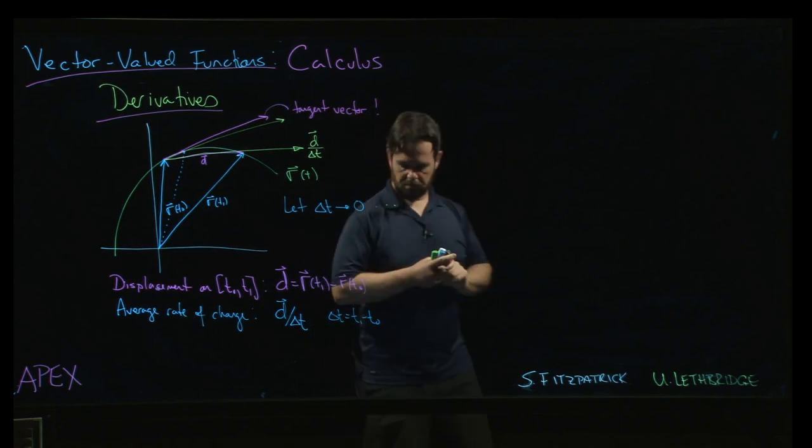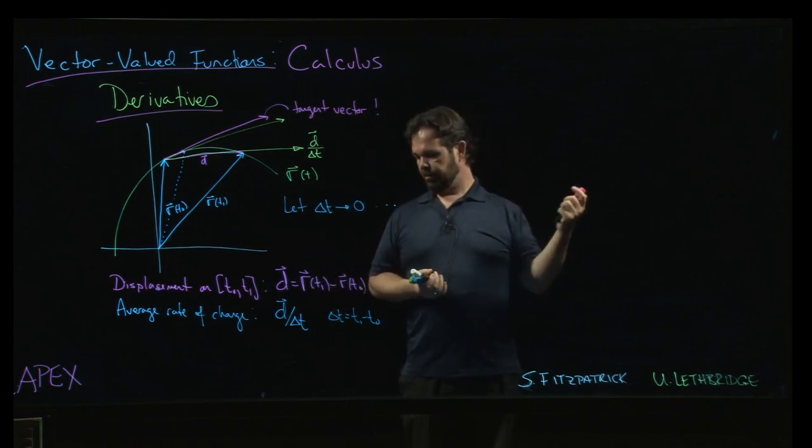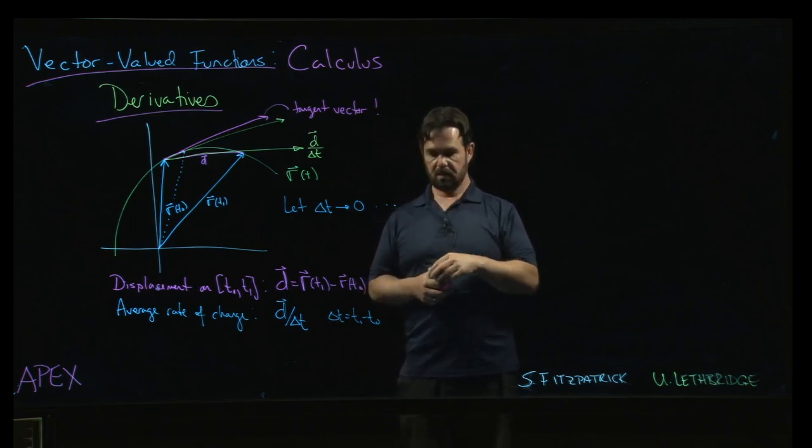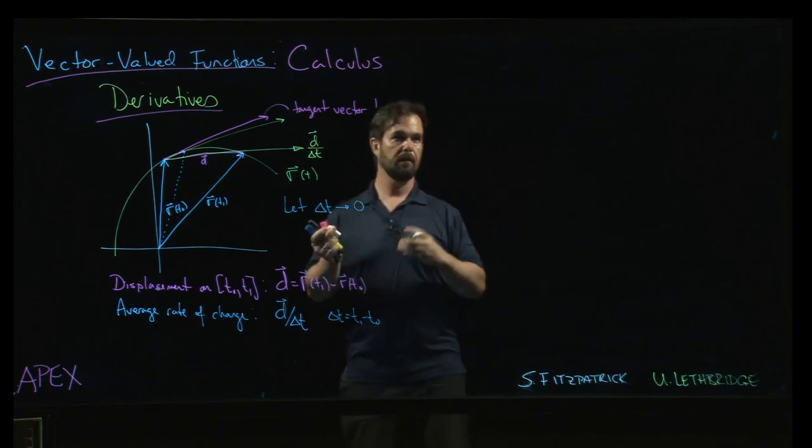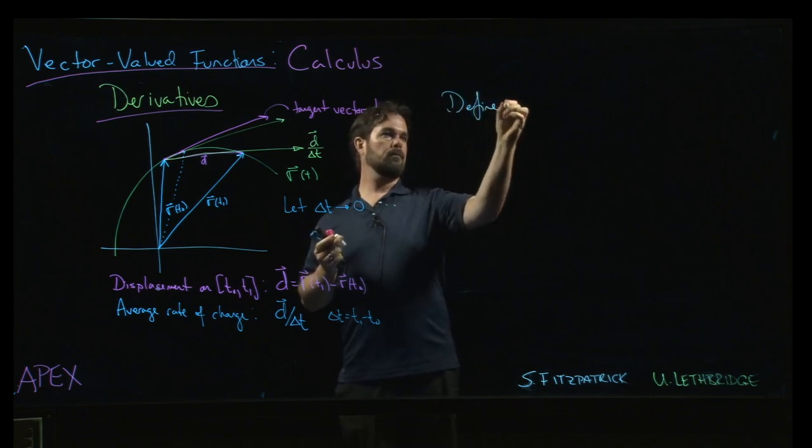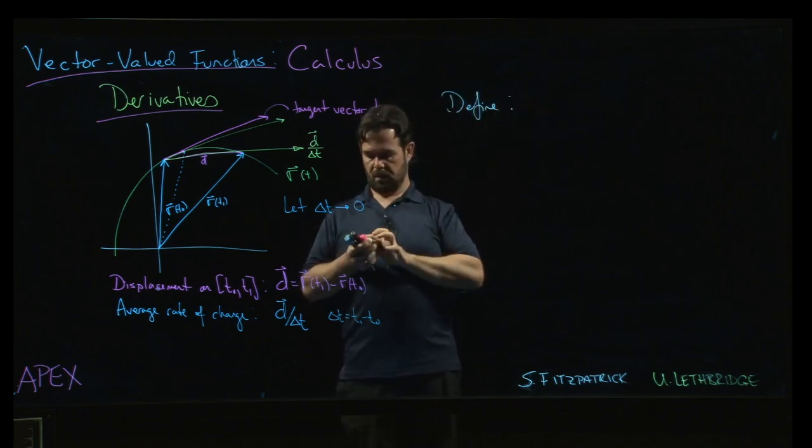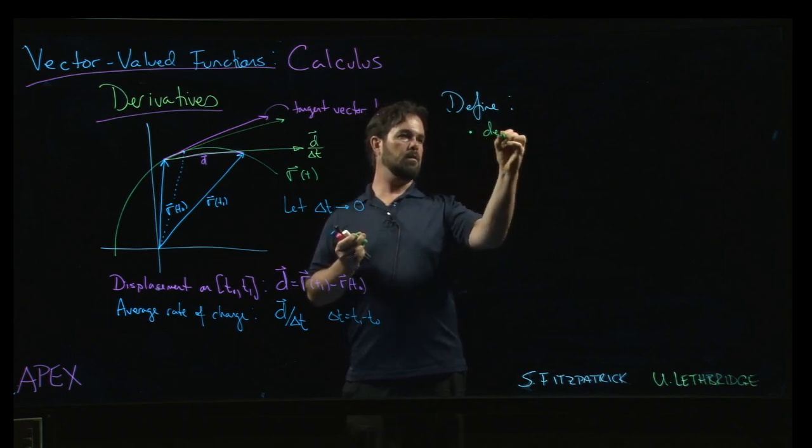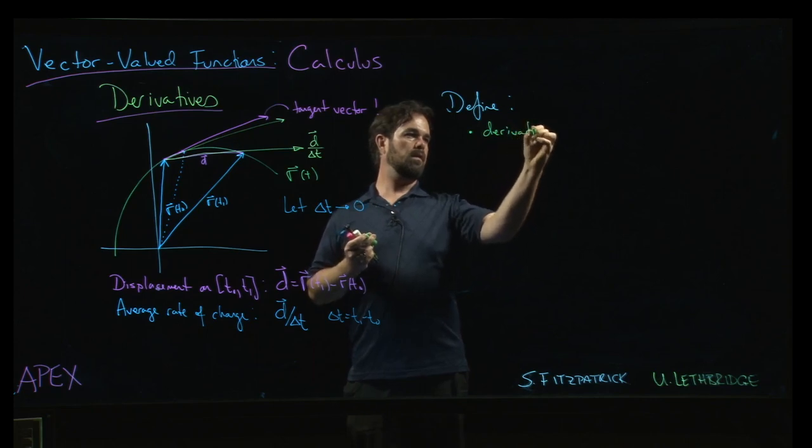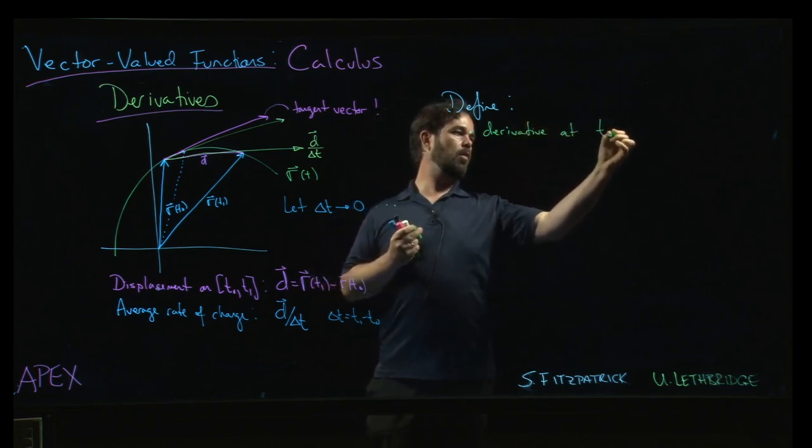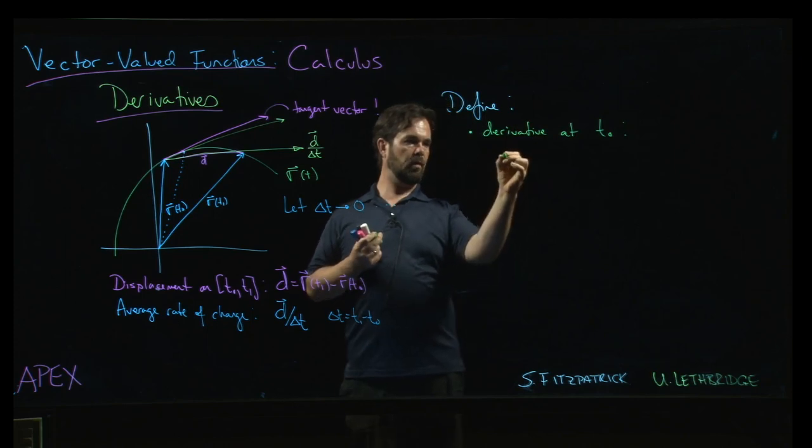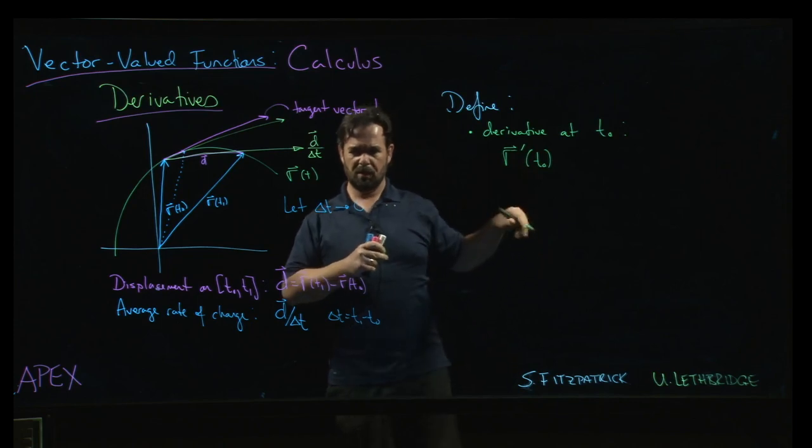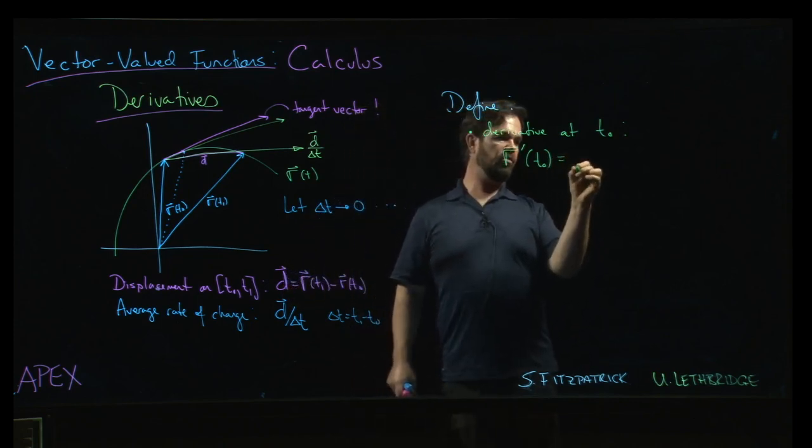Awesome. Okay, so if you think about what's going on here, what we can do is we can define the derivative at a point. We'll call it r prime of, let's say, t naught—maybe the book uses c, I don't know. And just like usual with derivatives, that delta t we'll call it h.